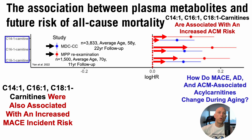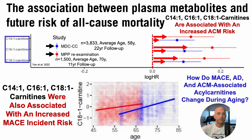So how did these acylcarnitines — the ones associated with cardiovascular events, higher in Alzheimer's disease, and all-cause mortality — change during aging? That's potentially important because are these acylcarnitines markers of just a pathological state, or do they also increase during aging? In terms of age-related changes, let's take a look at the C18-1 carnitine within the 45 to 85-year age range. For both the MDC-CC and the MPP re-examination studies, there was an increase for the C18-1 acylcarnitine during aging.